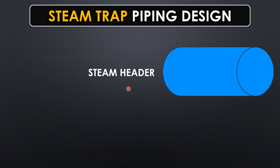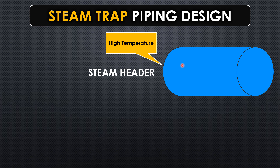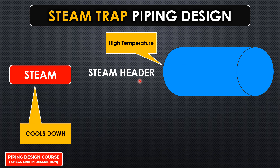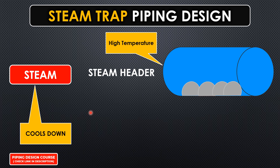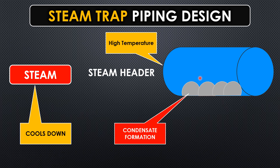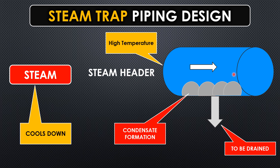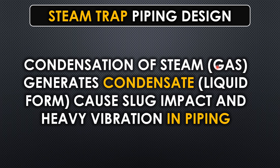In a steam header, you will find steam at high temperature, but over a period of time, after going through multiple processes, the steam cools down and becomes condensate. This condensate will travel along with the steam and keep hitting every elbow and fitting, causing vibration in the piping. Condensation of steam, which is in gas form, generates condensate in liquid form and causes slug impact and heavy vibration. It's really important to remove the condensate immediately.